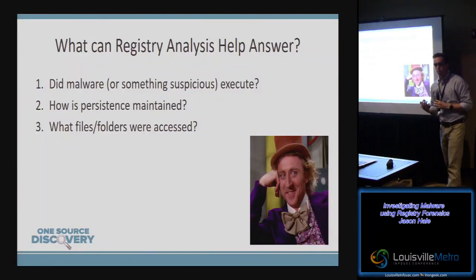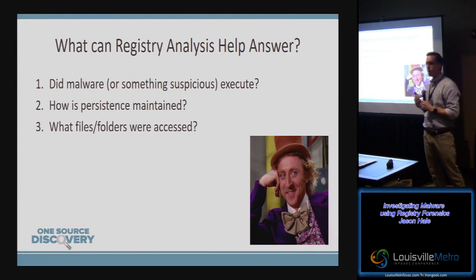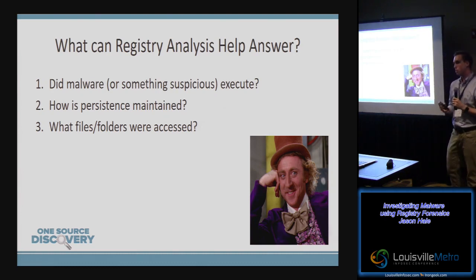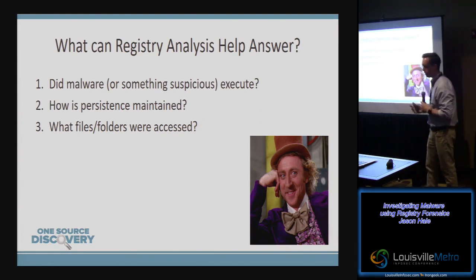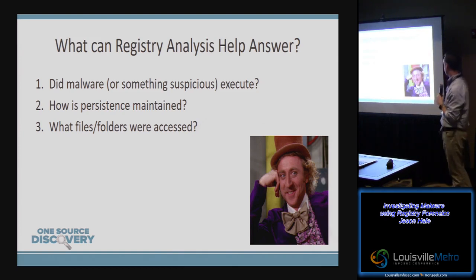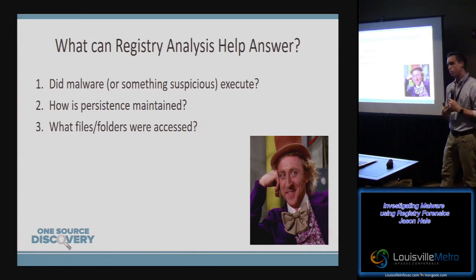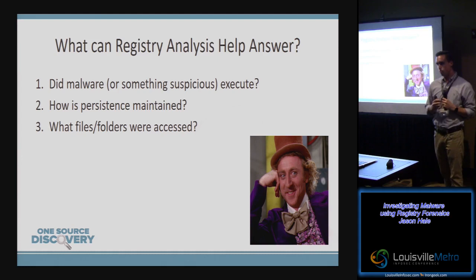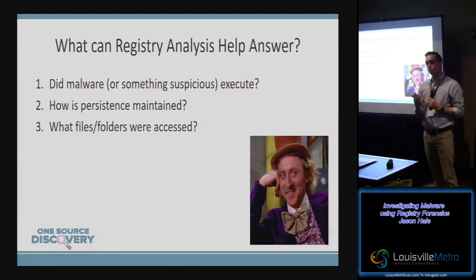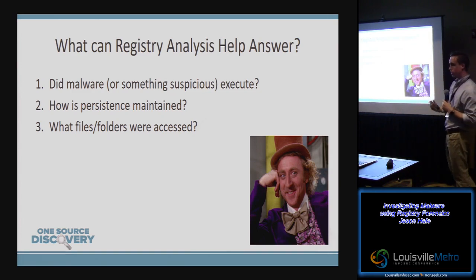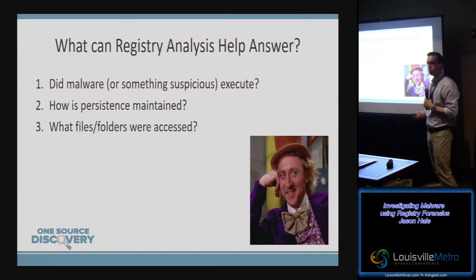There are three primary questions that registry analysis can help answer in the context of a malware investigation. The first is: did it execute? — did malware or something suspicious execute on the system? We'll look at program execution artifacts in the registry. The second is: how is persistence maintained? — how is the attacker maintaining a foothold in your network or on your system? And third: what files and folders were accessed? We'll look at all of these today.